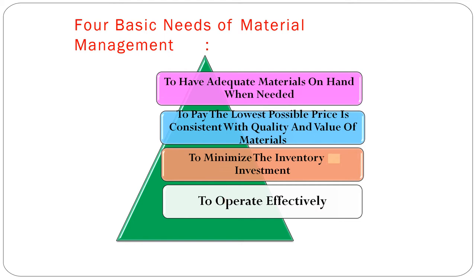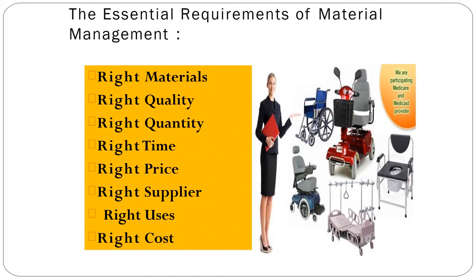The essential requirements of material management include eight rights: right material, right quality, right quantity, right time, right price, right supplier, right uses, and right cost. A material management system should maintain these eight rights to keep up the quality of the supplied material.